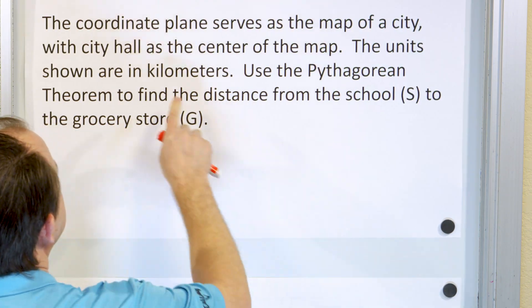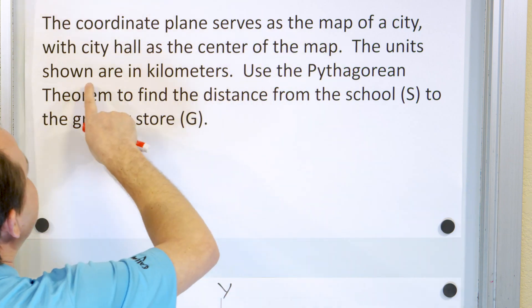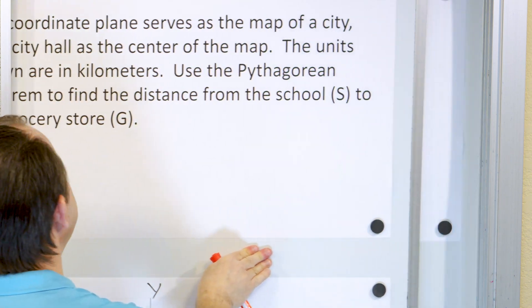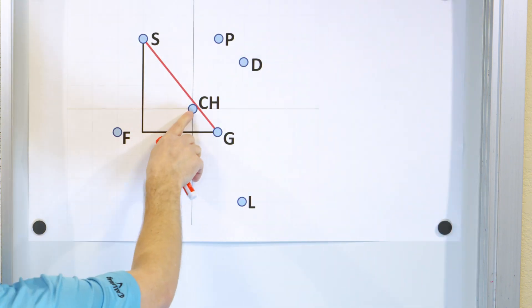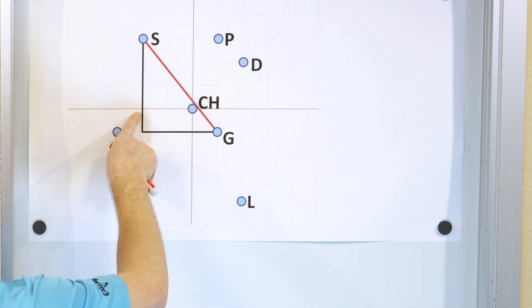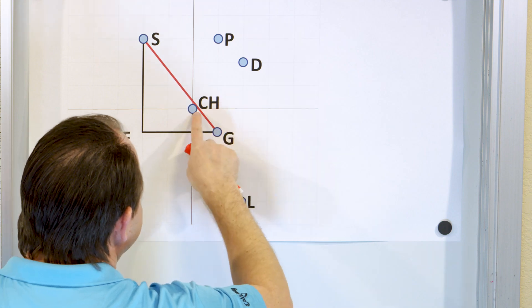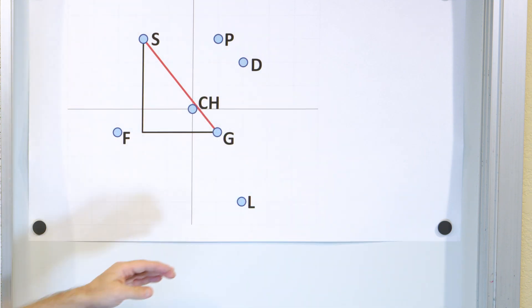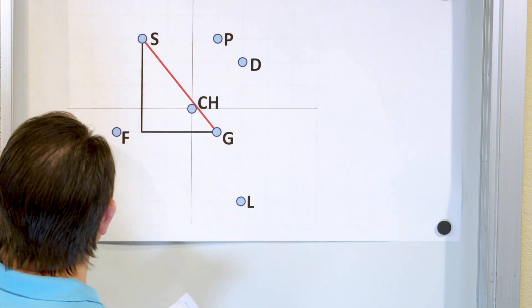Or actually says in the problem statement, it says city hall is the center, the units shown are in kilometers. So it might be like, here's city hall, and then this is one kilometer to the left or west, and this is two kilometers west, one kilometer east, one kilometer north, one kilometer south.